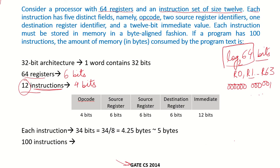Each instruction has 5 distinct fields. The opcode requires 4 bits. There are 2 source register identifiers, each requiring 6 bits. There is 1 destination register identifier, which also requires 6 bits, and a 12-bit immediate value.